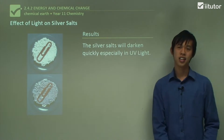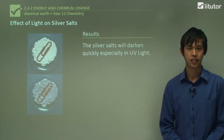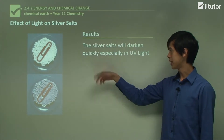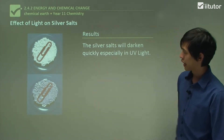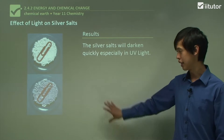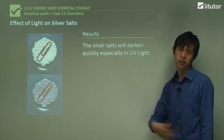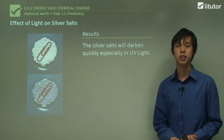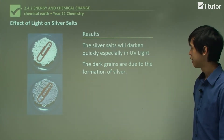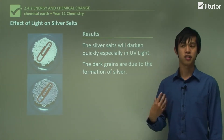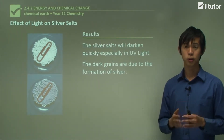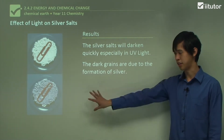Here are some results you'll typically find — and if this doesn't happen, don't worry, lots of things go wrong in school experiments. The silver salts will darken quickly, especially in UV light. Silver chloride can turn from white to purple, and if you leave it out long enough, it'll turn black. The dark grains are due to the formation of pure silver metal — when you expose silver chloride to light, you form pure silver crystals or grains. That's the darkening.